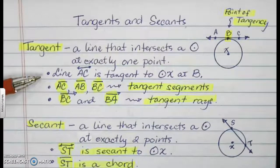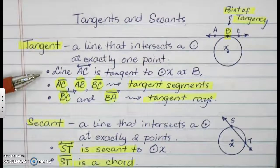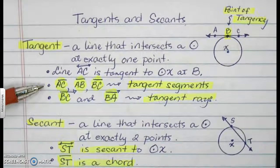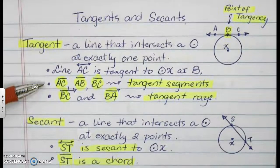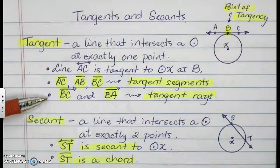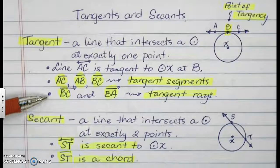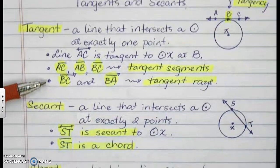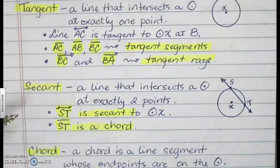So line AC is tangent to circle X at B. B is the point of tangency. Line segment AC, line segment AB, and line segment BC are all called tangent segments. Ray BC and ray BA are called tangent rays.